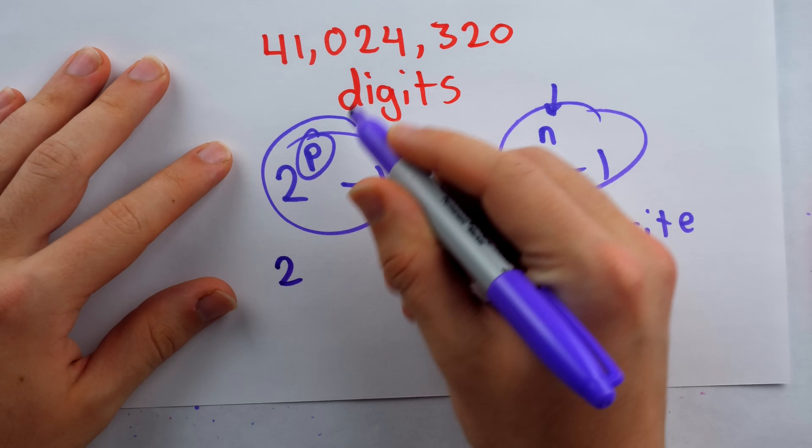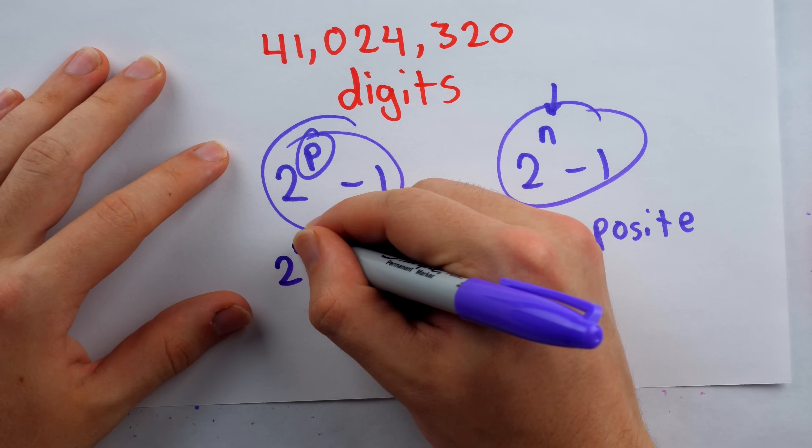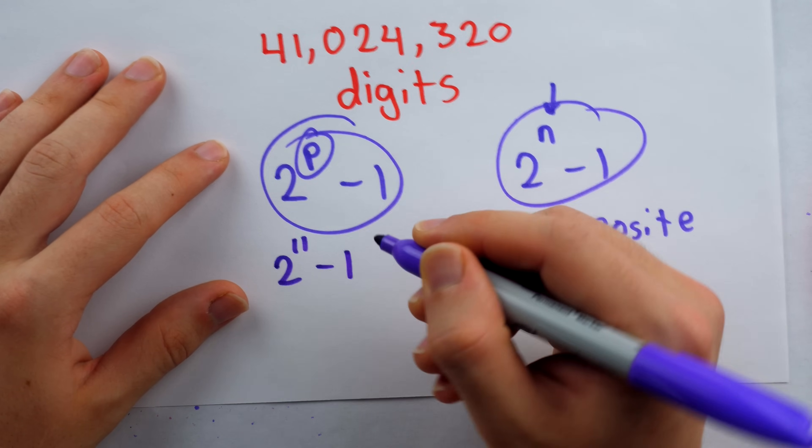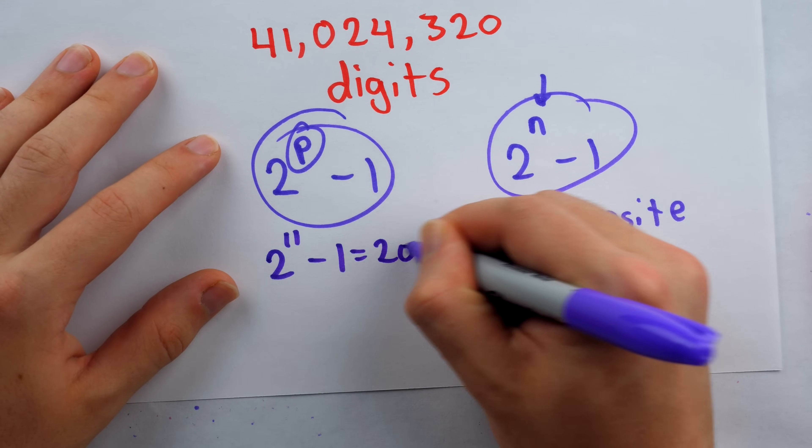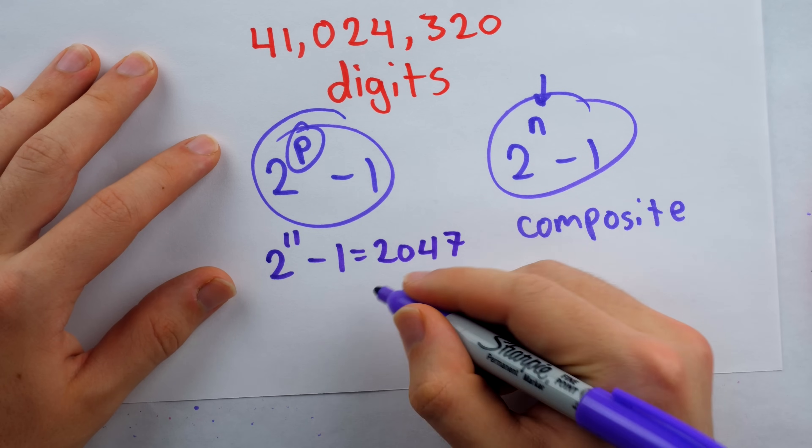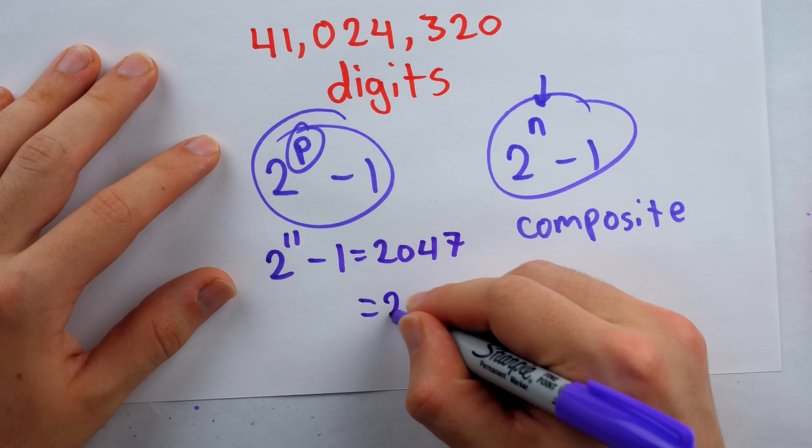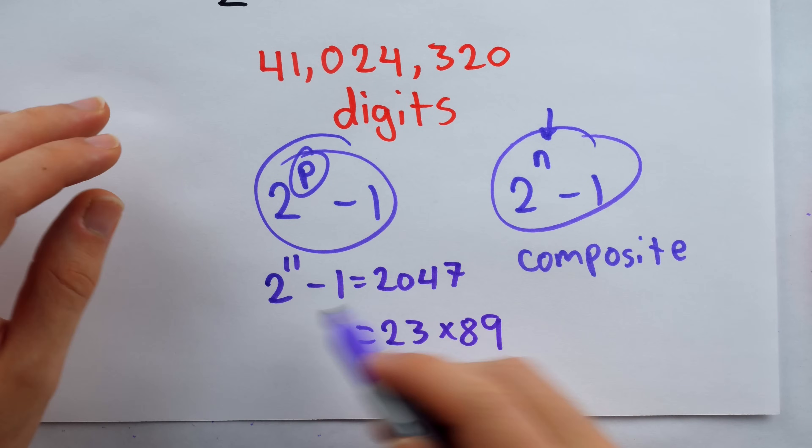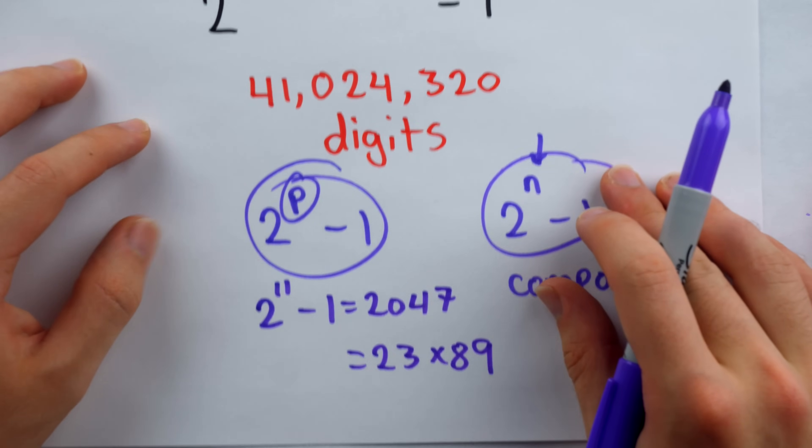We now know the first example of a number of this form that's not prime is the 11th such number. Two to the 11 minus one, which is 2047. This is not prime. It is in fact composite. It equals 23 times 89. So not all of these numbers are prime.